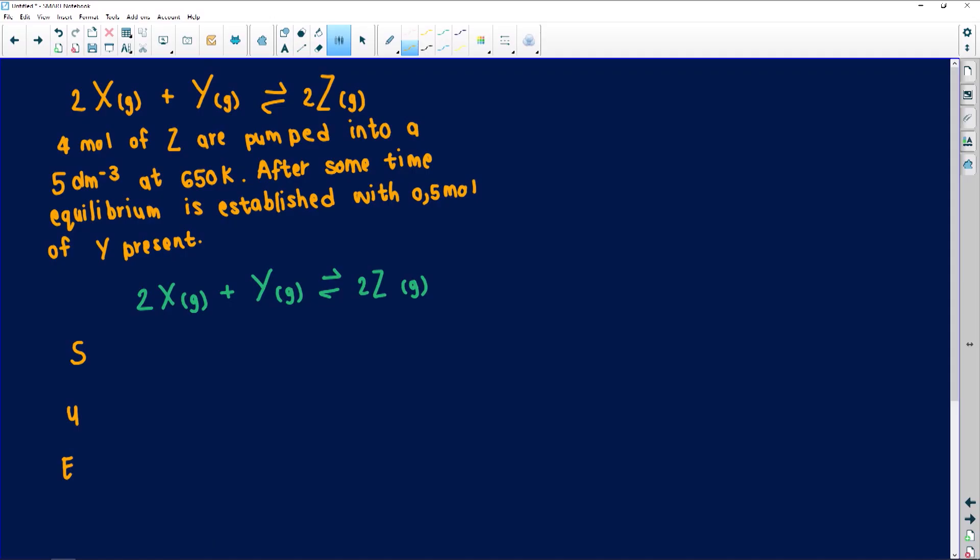So 4 moles of Z are pumped. So initially, I have 4 moles of Z. Remember, when something is being put, all the others do not exist. They are all zero. They haven't been made yet. It's pumped in a 5 cubic decimeter flask at 650 Kelvin. After some time, equilibrium is established. So at equilibrium, I've got 0.5 moles of Y at equilibrium. Now, another trick for this one, what I teach my kids, I'm going to use ratios. I'm going to put a 2x there because I've got a 2, but I don't know what I've used. At the Y, I just have an x because now I've got 0 minus something gave me that. And then on this side, I just have a 4, but it also is a 2x.